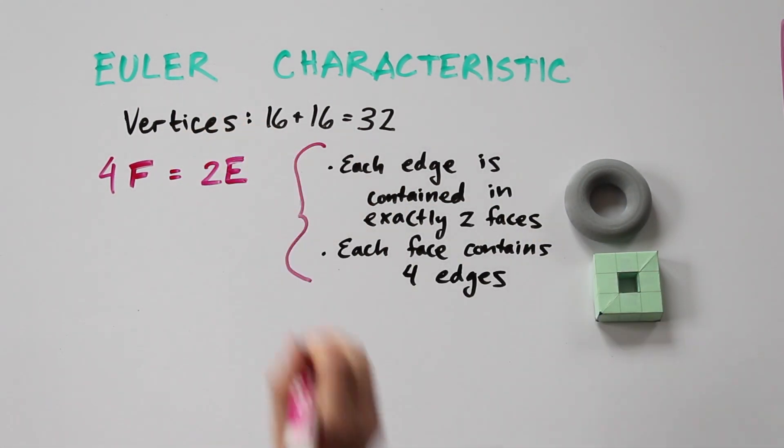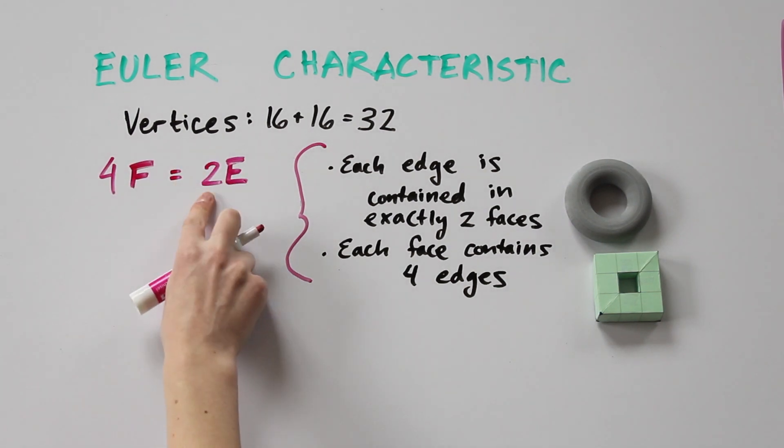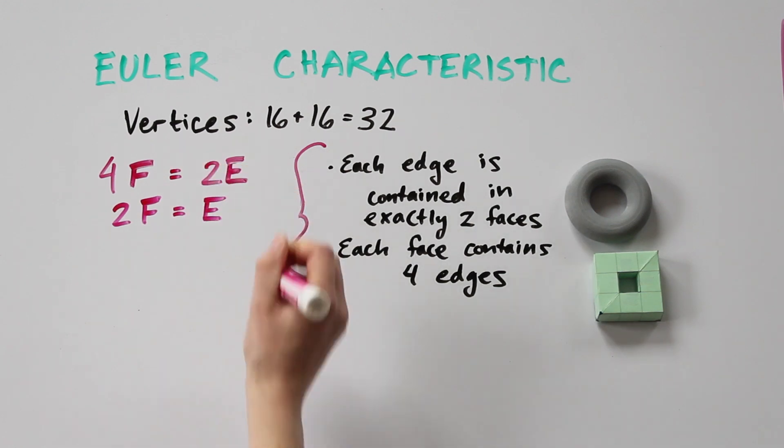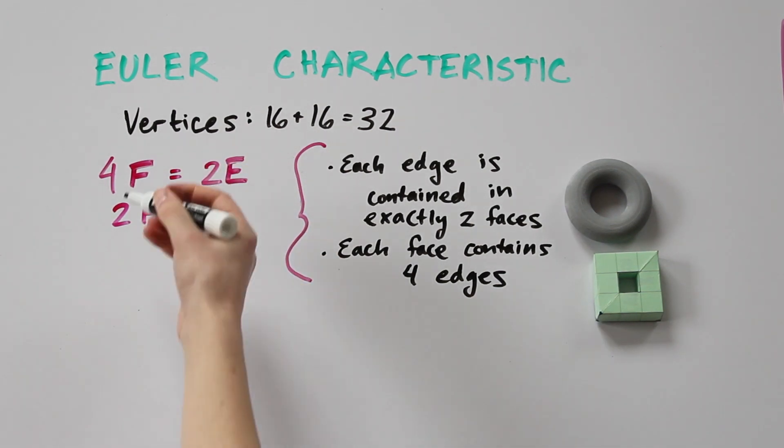This gives the equation 4 times F, the number of faces, is 2 times E, the number of edges, which means that 2F equals E.